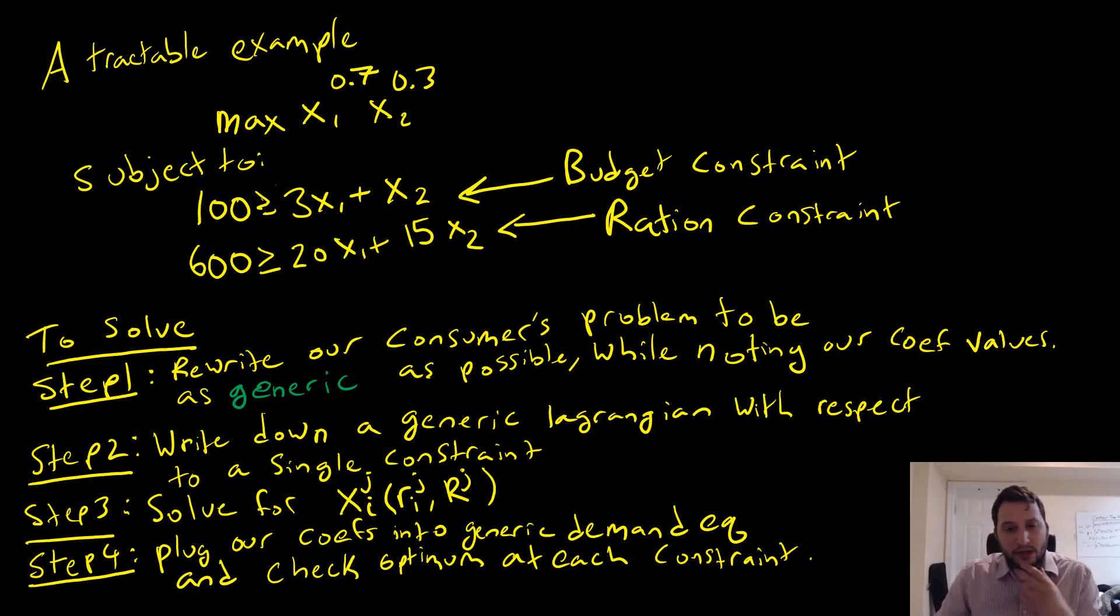So in order to solve this, we're going to write down our consumer's problem to be as generic as possible while noting our coefficient values. After we're going to write down a generic Lagrangian with respect to a single constraint, we're then going to solve for our generic demand functions here with respect to our price values or our unit costs that are there and the objective value of the constraint capital R. Step number four is that we're going to plug our coefficients into our generic demand equation and check for the optimum at each constraint.